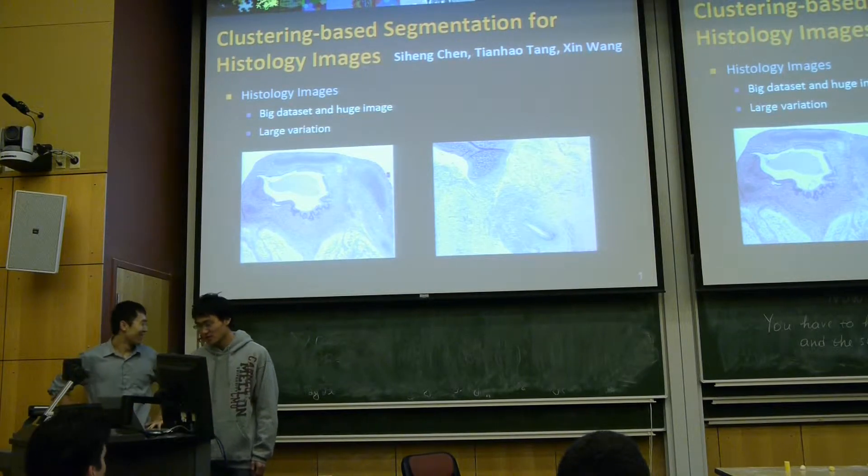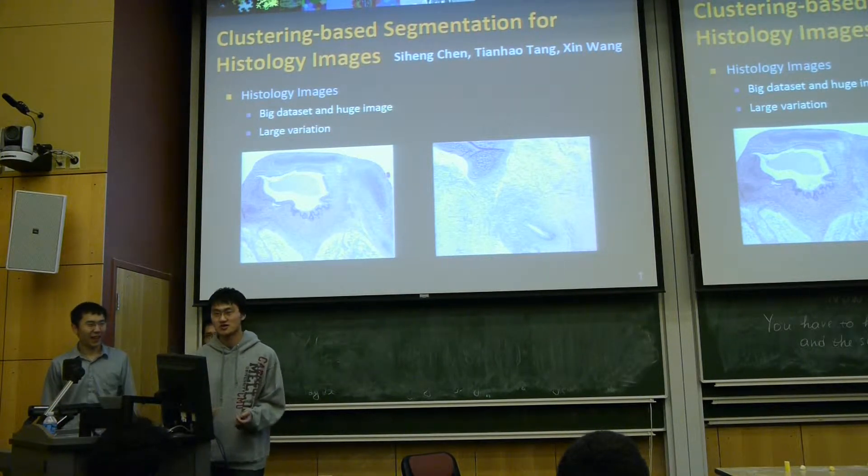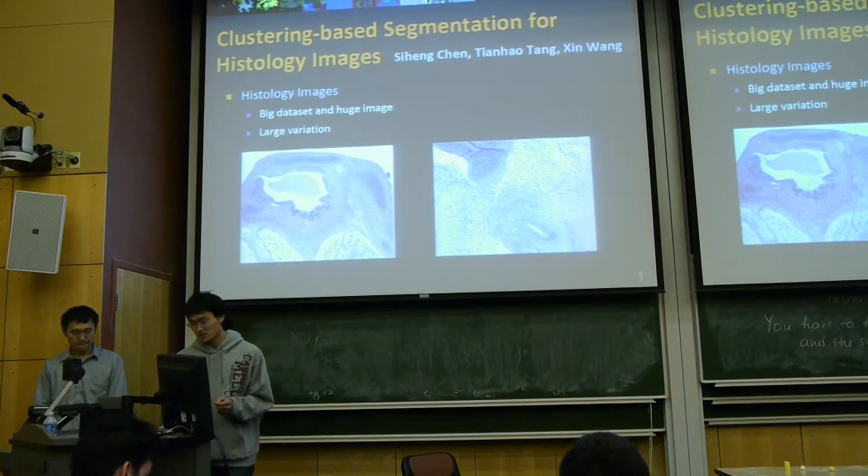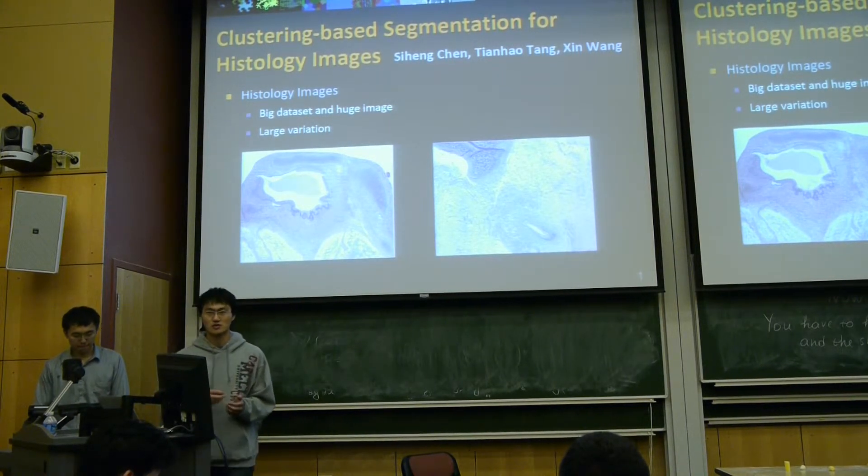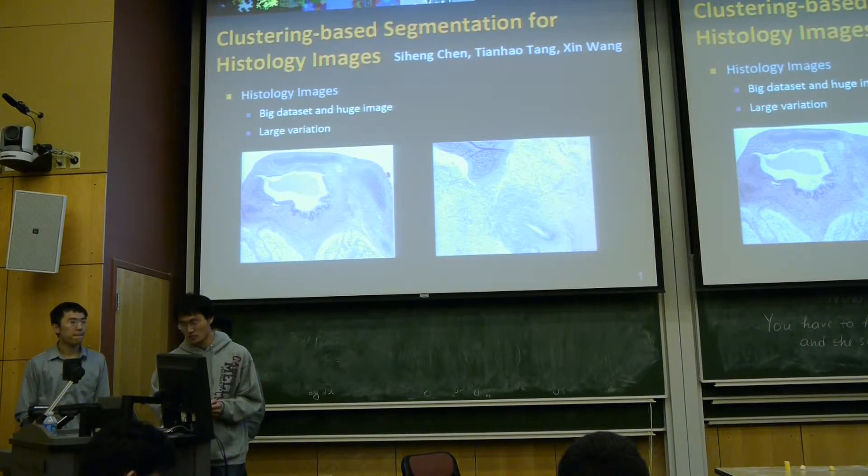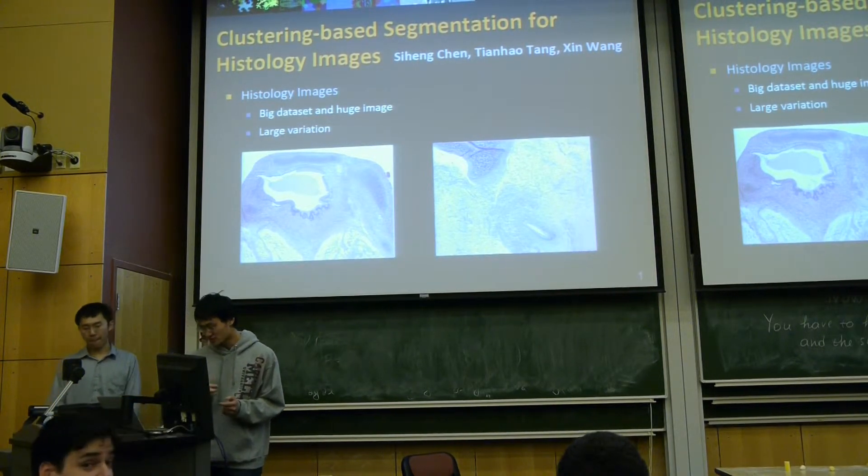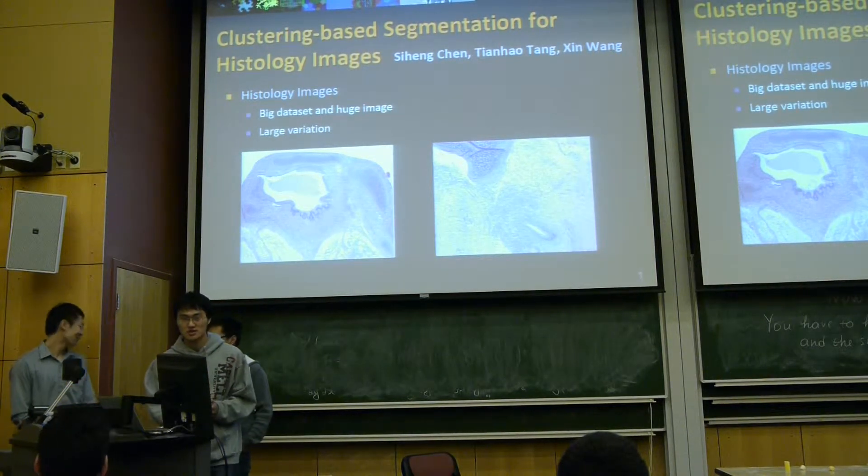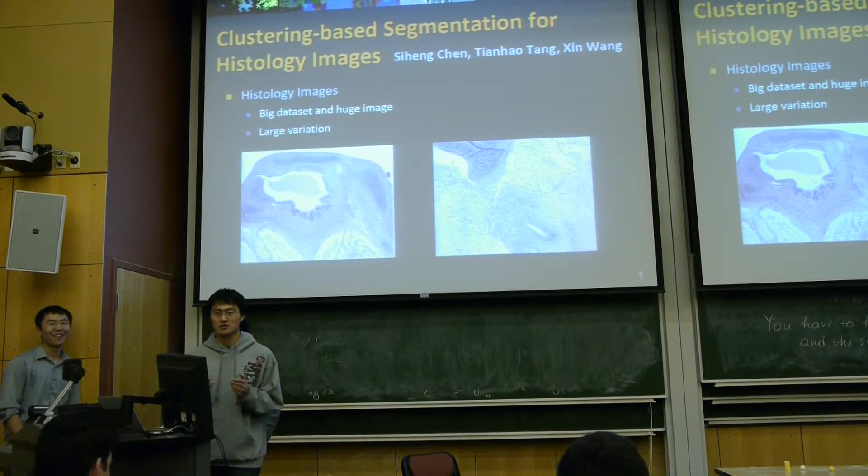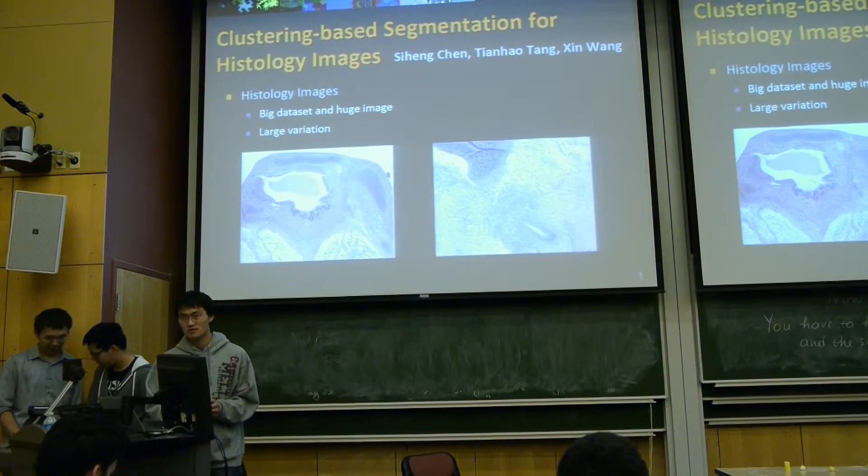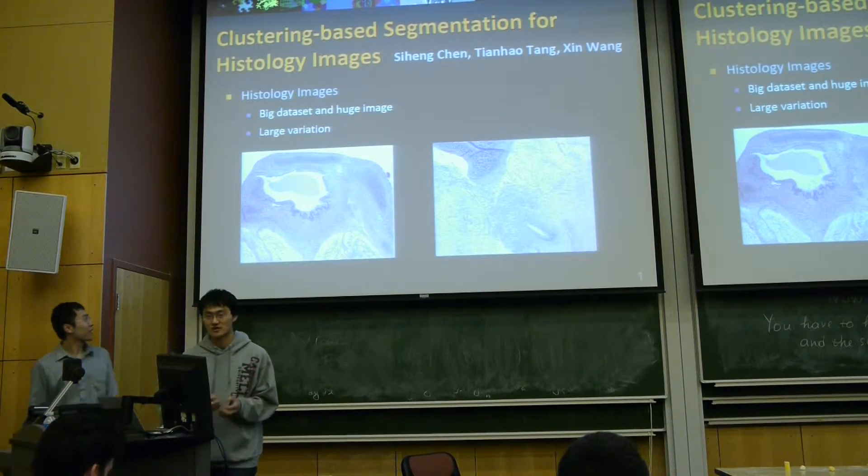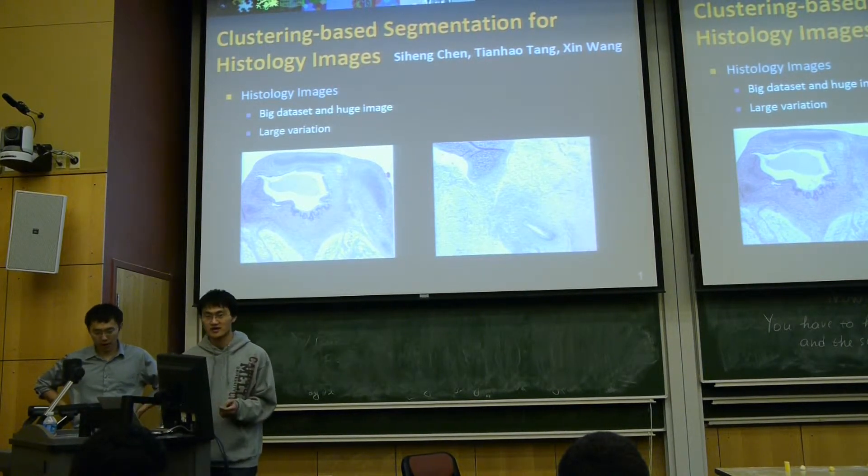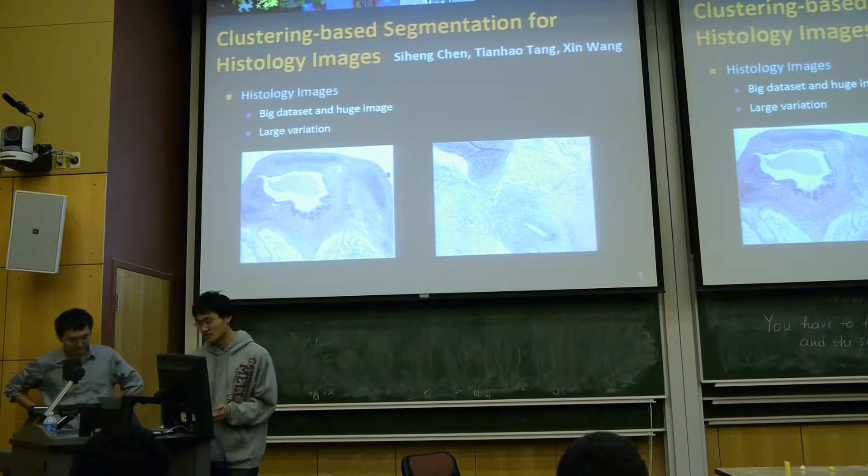Why histology images? Histology images contain a lot of tissues, and pathologists can first segment histology images, then detect if there's some tumor or disease. Pathologists segment the tissues and find the bone, cartilage, or fat in the images, then detect the combination to do classification or segmentation to identify if it is disease, tumor, or normal.